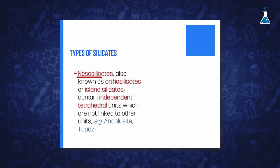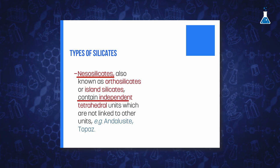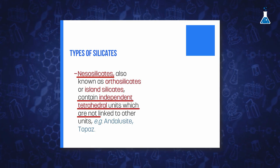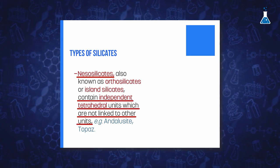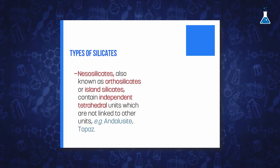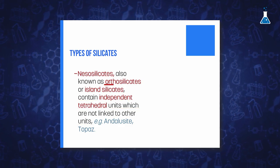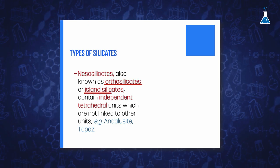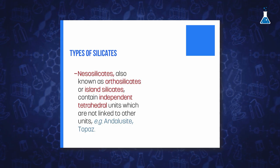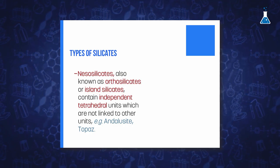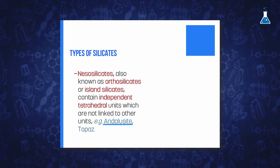The simplest class is the nesosilicates, which contain independent tetrahedral units which are not linked to other silica tetrahedra by shared oxygen atoms. This type of silicates are also known as orthosilicates or island silicates, and some examples of nesosilicates are olivine, andalusite or topaz.